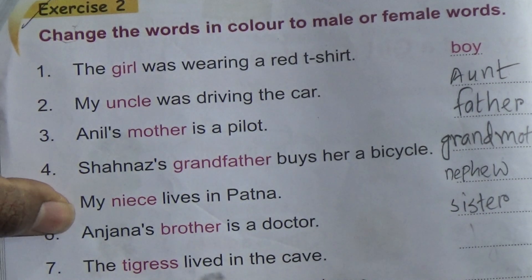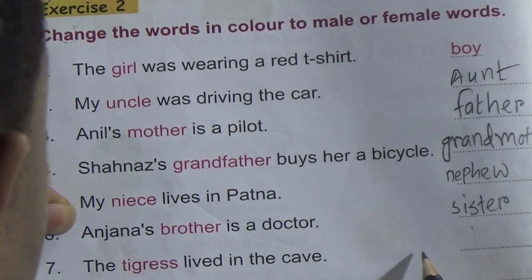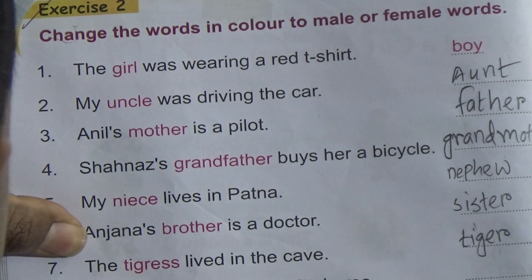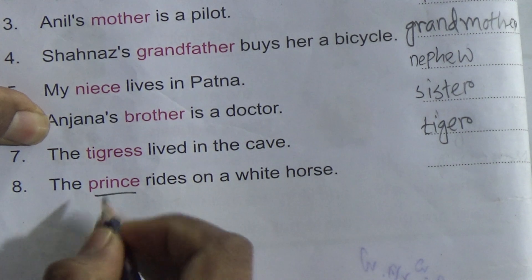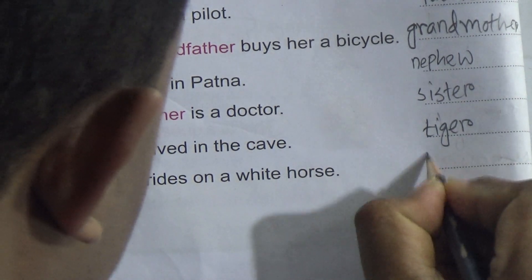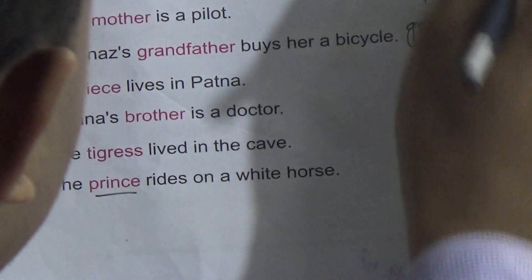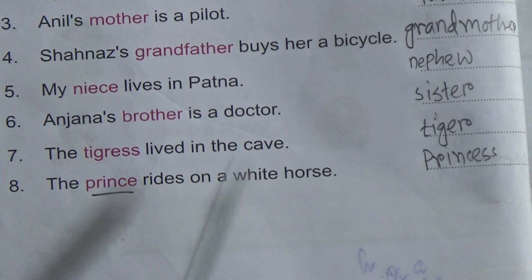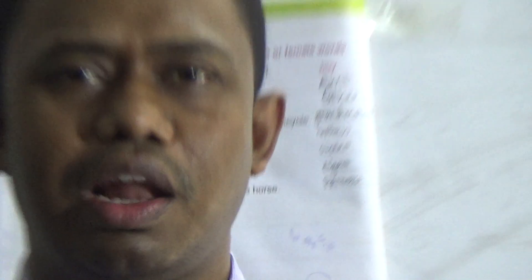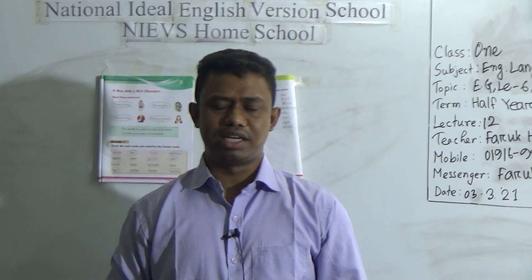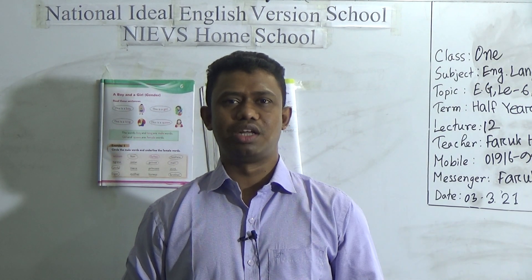The tigress lived in the cave — so it would be tiger. The prince rides on a white horse — here is the word prince, and its female form is princess. So these are all the words I have written. You will study them. This is all about today's class. I hope you all have understood, and for your better understanding, you must practice it at home more and more. Assalamualaikum warahmatullahi wabarakatuh.